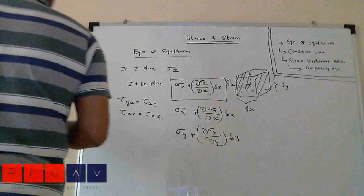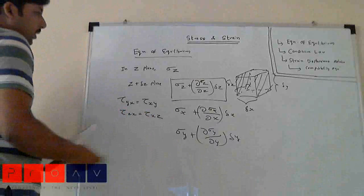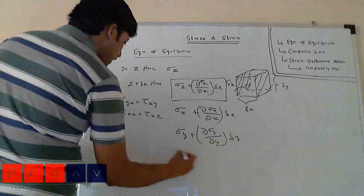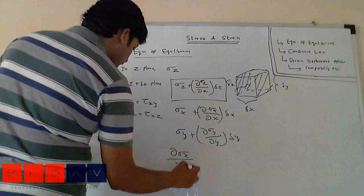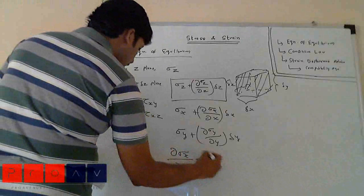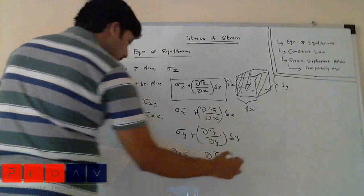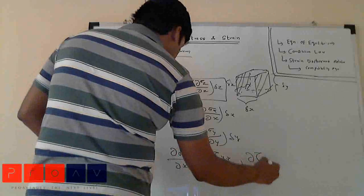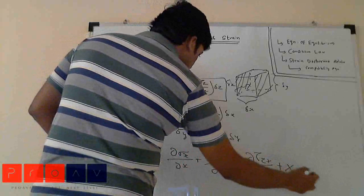Using the following assumptions like tau yx equals tau xy and similarly tau zx equals tau xz, we can simplify the equation. Now taking moments and adding these, we will be getting: d sigma x by dx plus d tau yx by dy plus d tau zx by dz plus X equals zero.